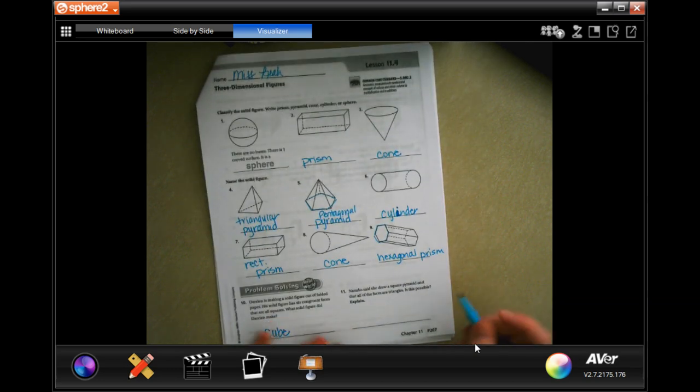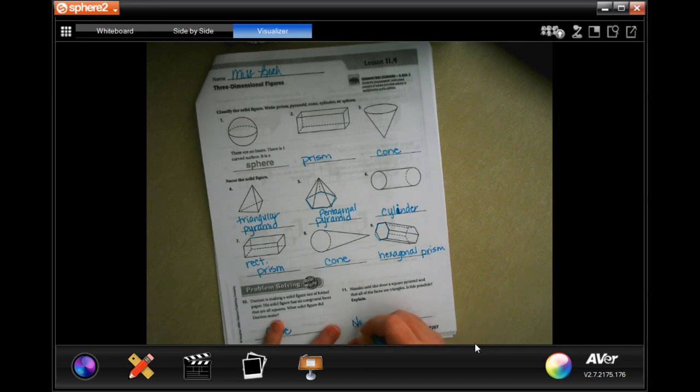Okay, Anko said she drew a square pyramid and all of the faces are triangles. Is that possible? Okay, so no, because the bottom face would be a square.